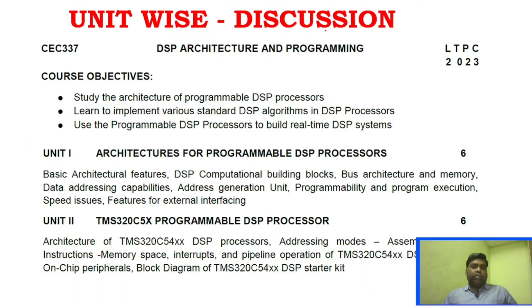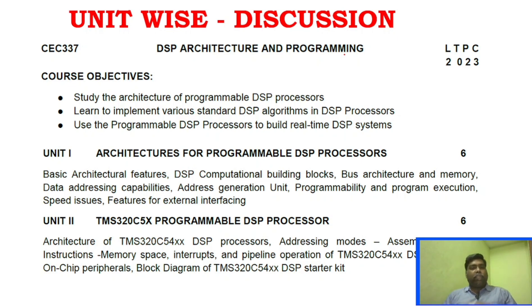We will start with unit-wise discussion. Unit 1 covers Architectures for Programmable DSP Processors — it is a very easy unit. Key areas include Programmability and Program Execution, and External Interfacing.